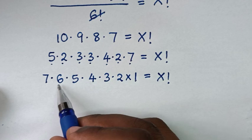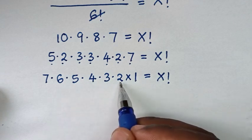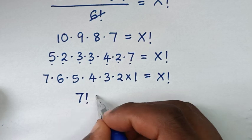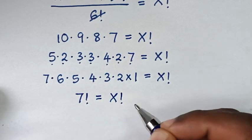From here, 7 times 6 times 5 times 4 times 3 times 2 times 1, this is 7 factorial, which equals x factorial.